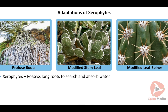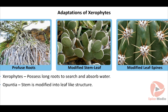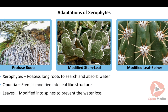Xerophytes have long roots which go deep into the ground in search of water. In opuntia, the stem is modified into a thick, flat and green leaf-like structure and does photosynthesis. Real leaves are reduced or modified into spines to prevent water loss.